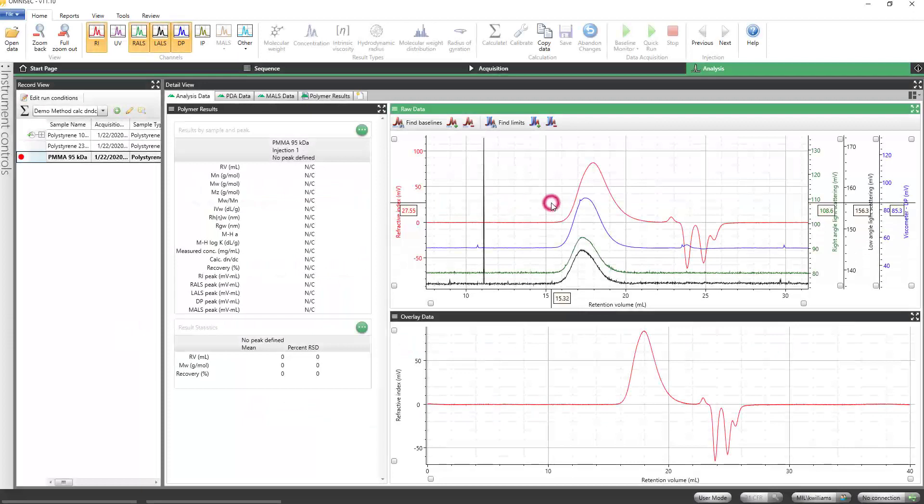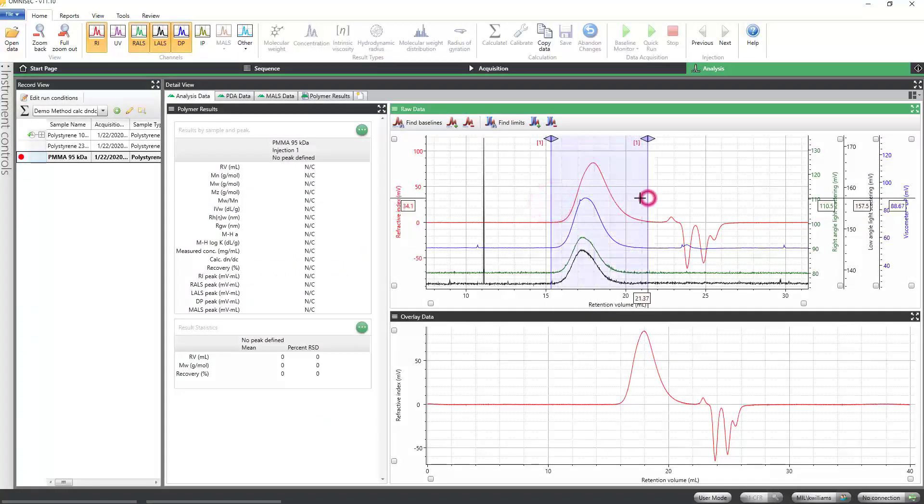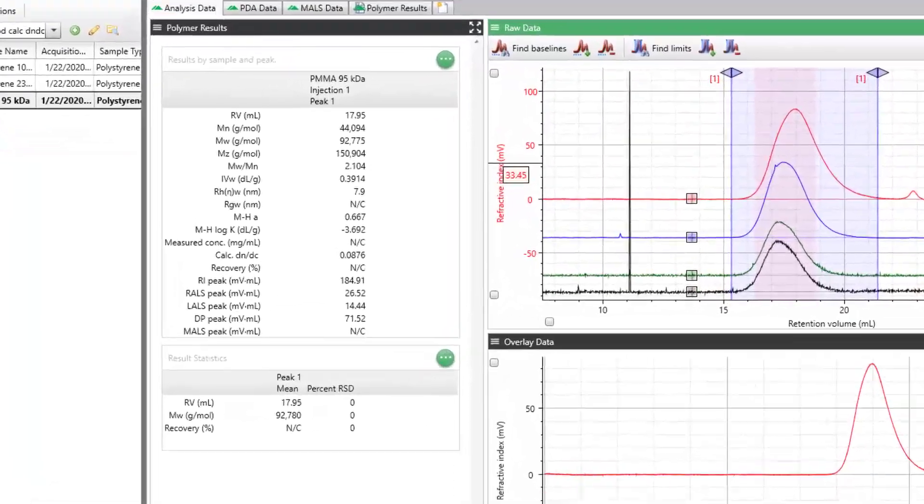Knowing the DNDC value for your sample increases the accuracy and amount of data available. So let the Omnisec software do what it does best and help you out.